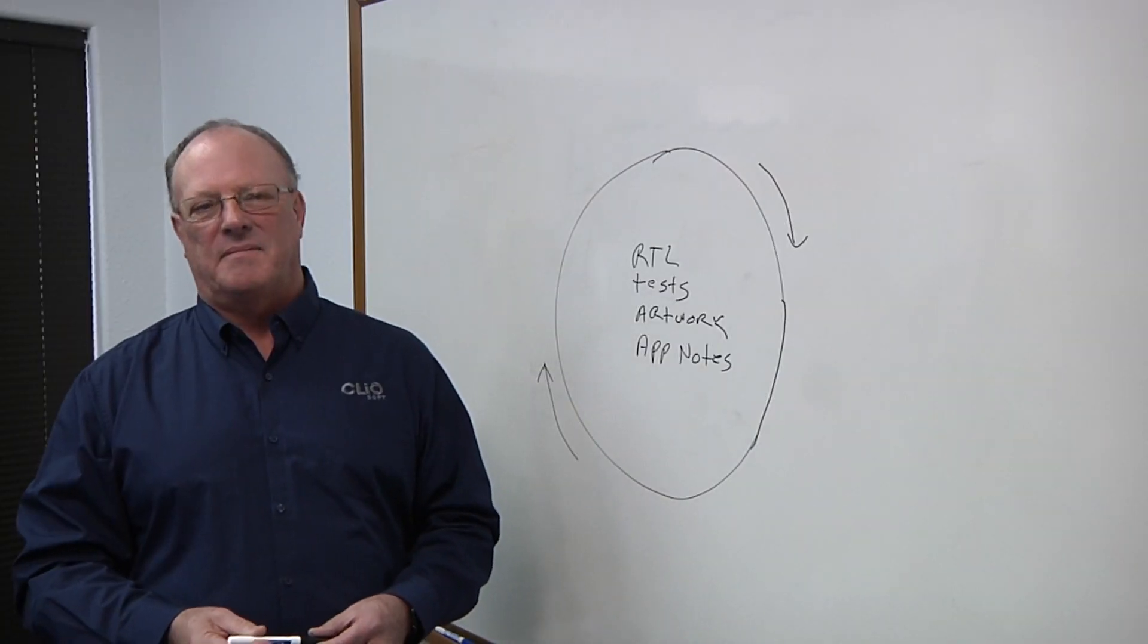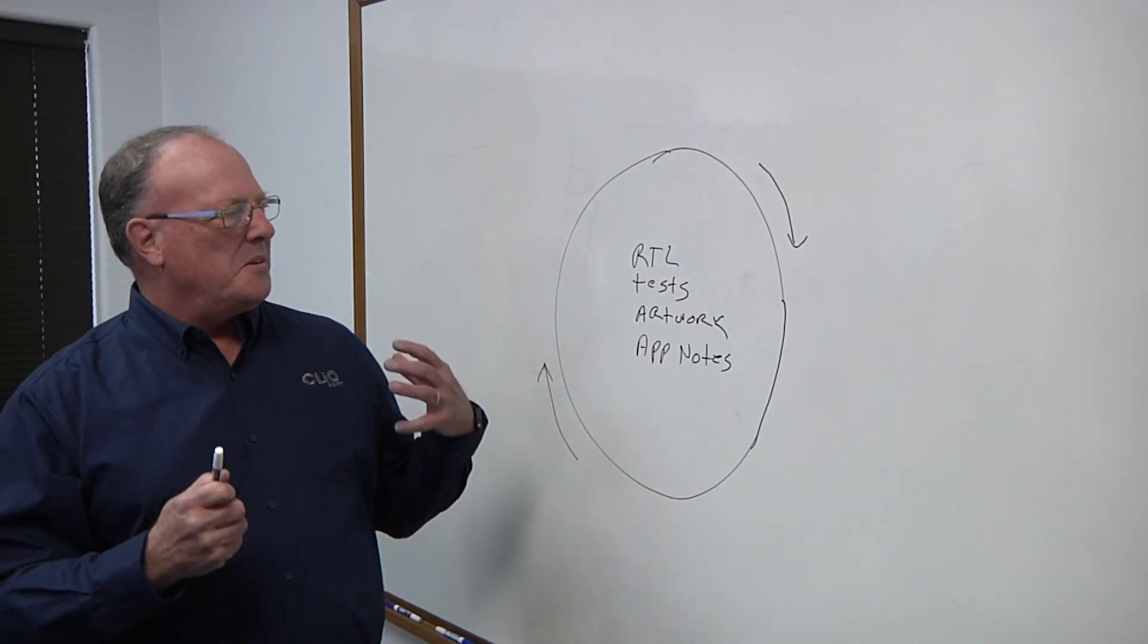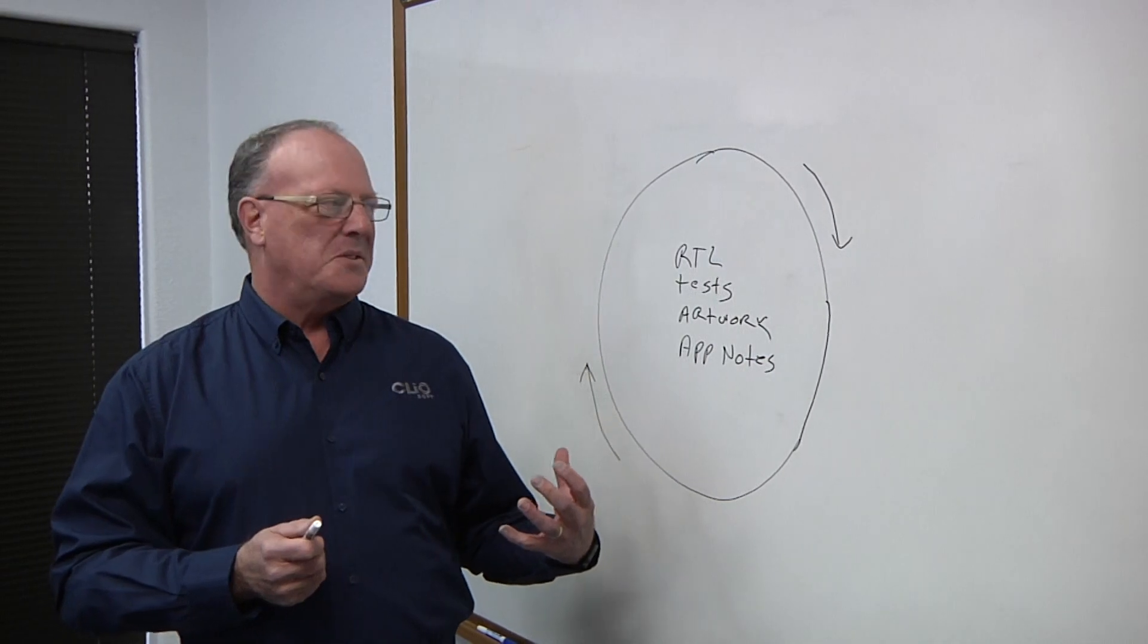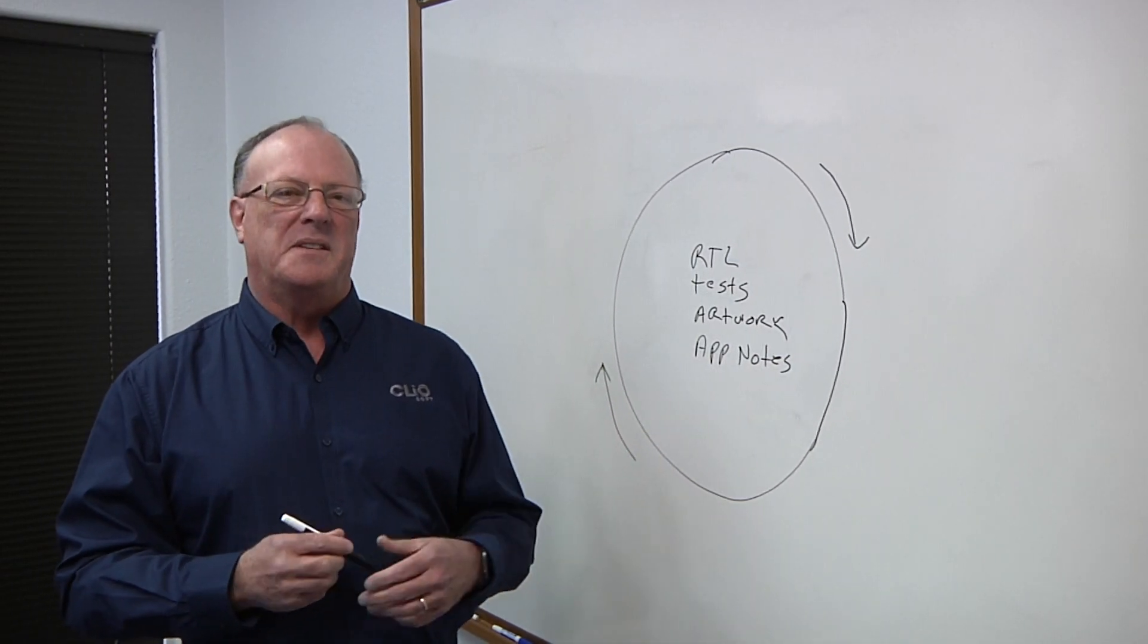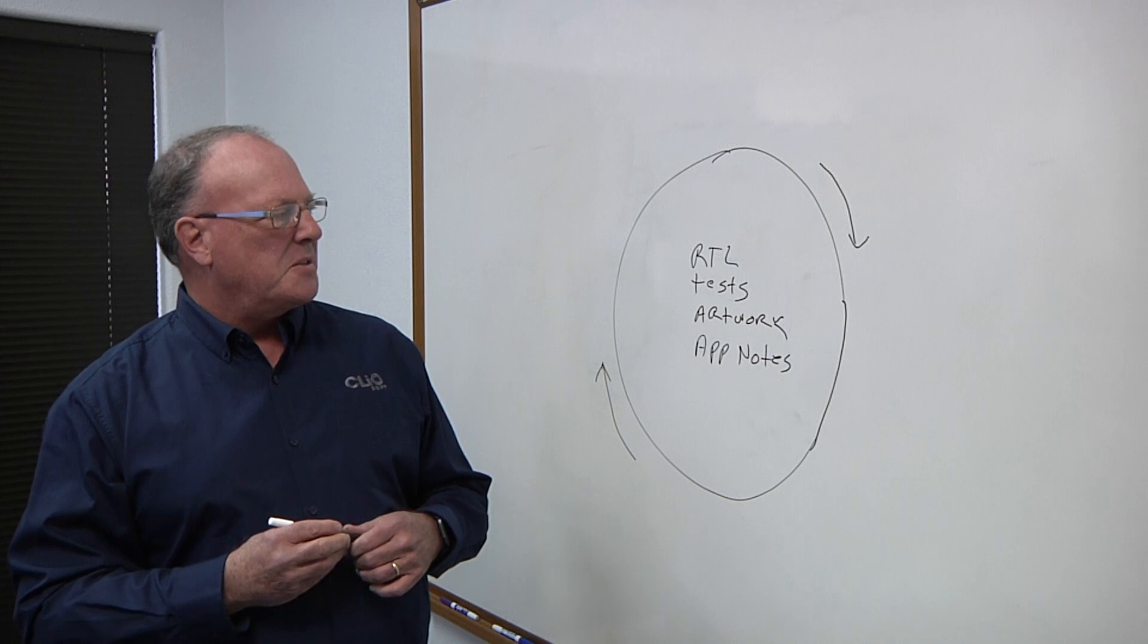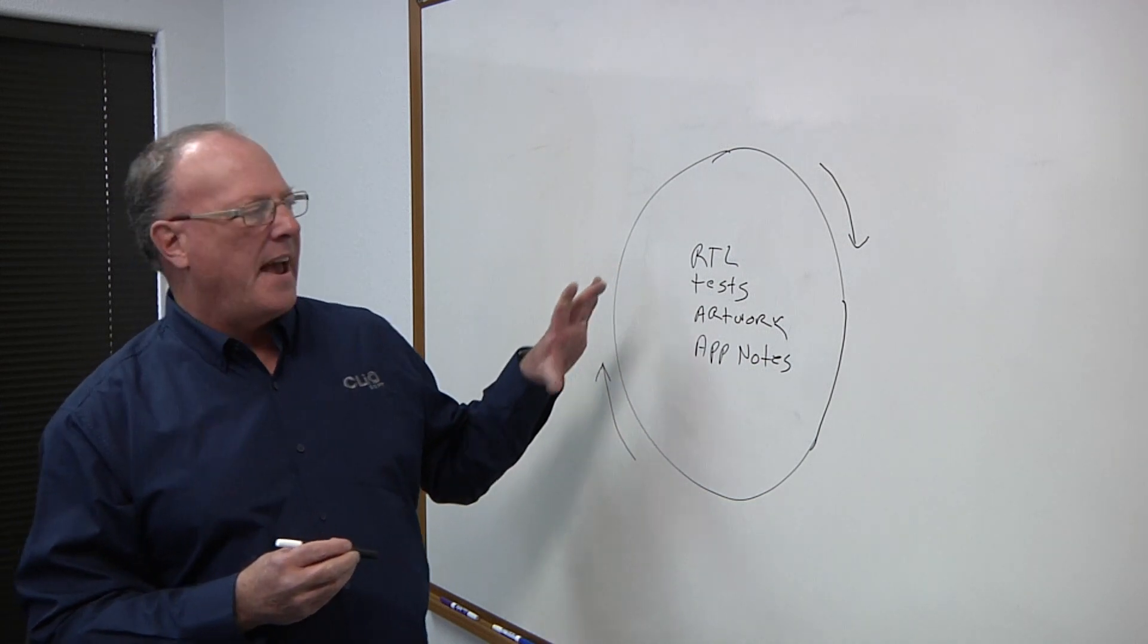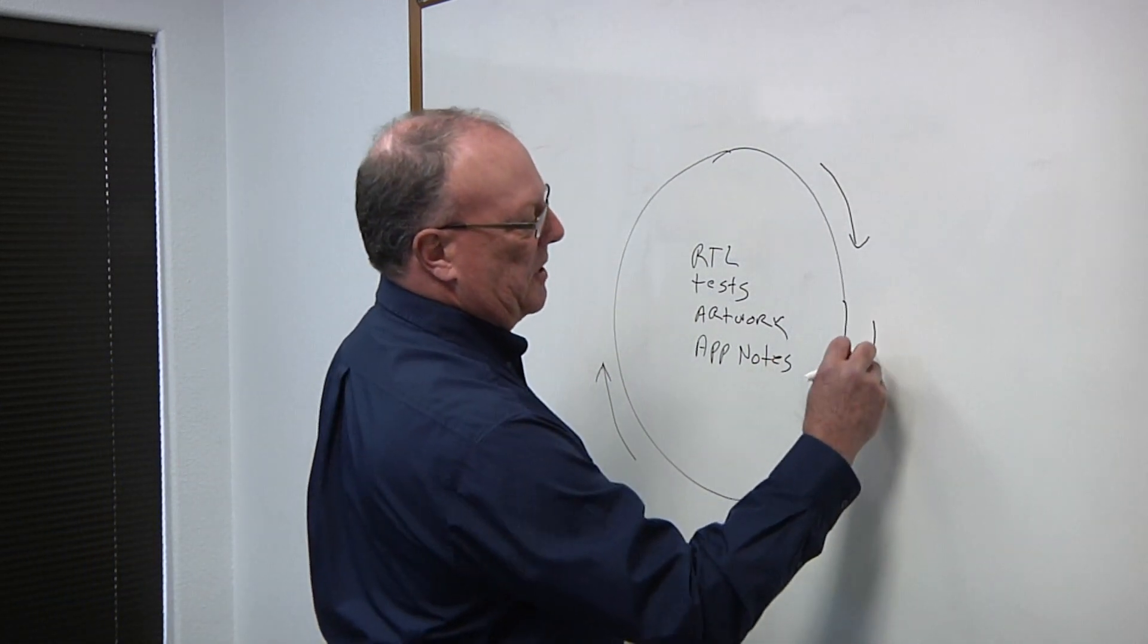So why don't you draw this out for us? So Jeff, what are we looking at? So basically, when you start to do IP reuse, there's a flow that a lot of companies come to eventually. And it starts with, what are the assets that you're going to have? That's where you start with publishing.